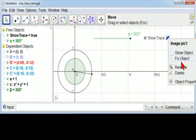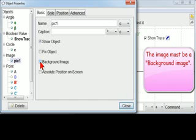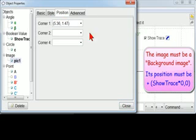And then you right-click, choose object properties. First thing you do is make it a background image. That's key. The second is you go to the position and you say plus show trace, so that Boolean, times zero.